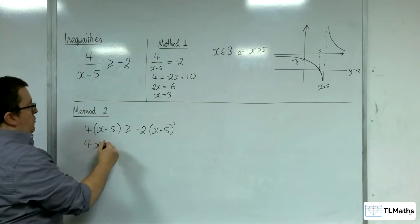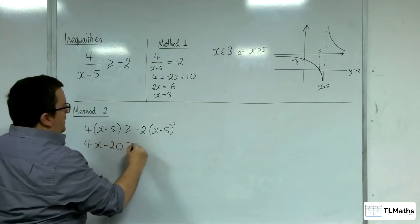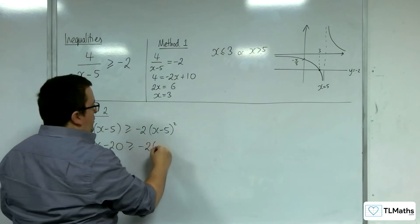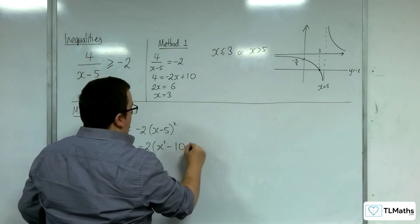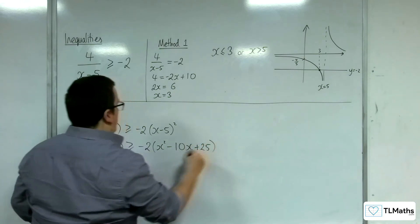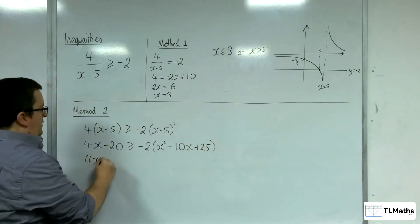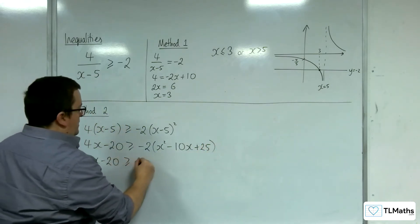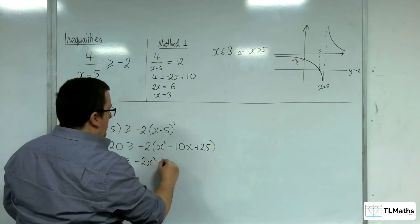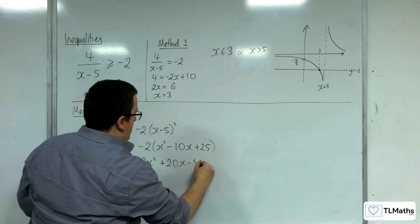So I'm going to expand everything out. 4x take away 20 is greater than or equal to, so we've got minus 2x squared take away 10x plus 25. So I'm going to have to expand that right-hand side. So minus 2x squared plus 20x minus 50.